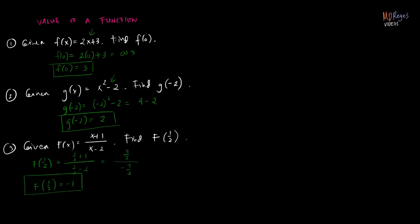We can also find the value of a function given an arbitrary value for x. Given f of x equals square root of x squared minus 1, find the value of f at a plus 1. It's the same process — to find the value of f at a plus 1, we just have to substitute a plus 1 for every x in the function.